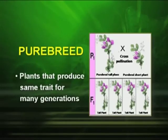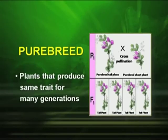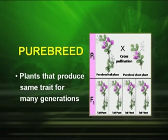Another very important term is pure breed, which gave Mendel all his success. What are pure breeds? These are plants that produce the same trait for many generations. For example, when we study Mendel's experiment, we will see a pure tall plant and a pure dwarf plant, as you can see in the figure.